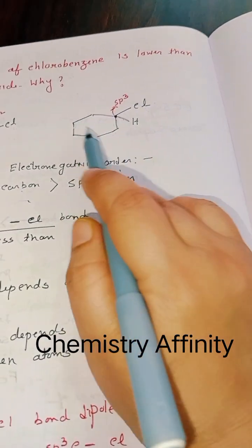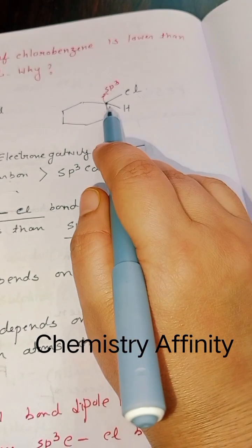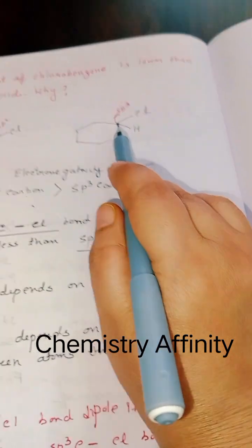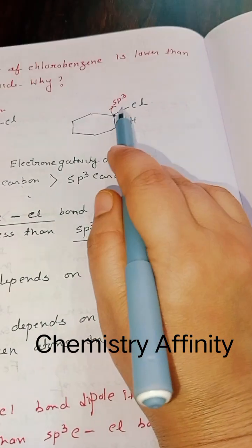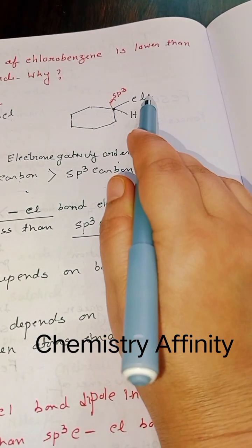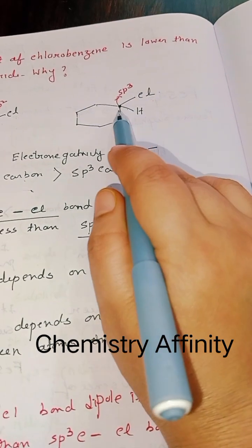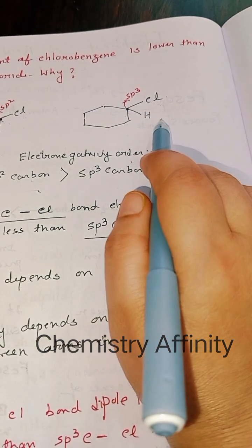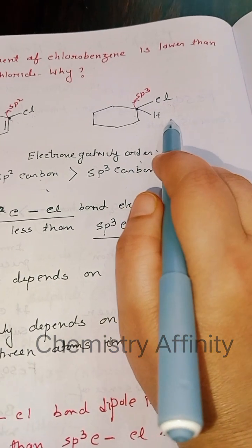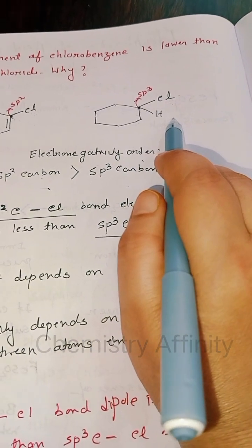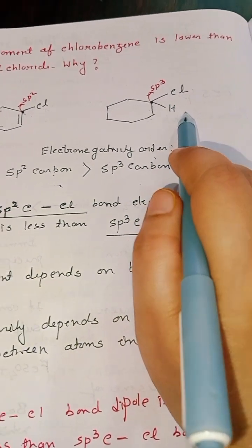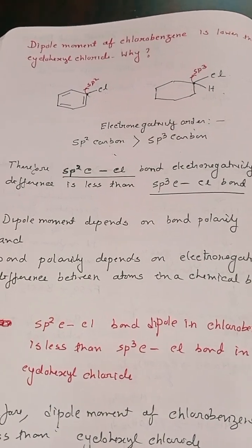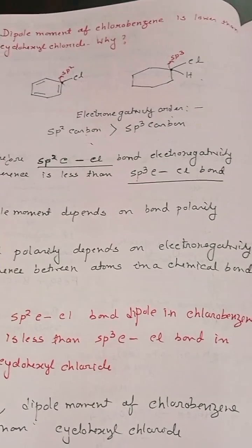In cyclohexyl chloride, the electronegativity difference between the sp3 carbon and chlorine is more, so bond polarity is more, which means the dipole moment value will be higher. I hope this explanation is clear to all the students.